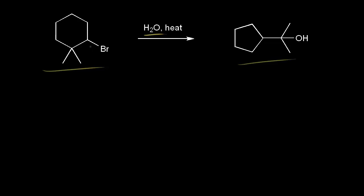The first step of this mechanism should be loss of a leaving group. These electrons come off onto the bromine to form the bromide anion. When we do that, we're taking a bond away from this carbon in red, so that gets a plus one formal charge. If I draw in my six-membered ring, the carbon in red is this one, and it has a plus one formal charge, so we have a carbocation. We put in these two methyl groups here. This is a secondary carbocation, because the carbon in red is directly bonded to two other carbons.